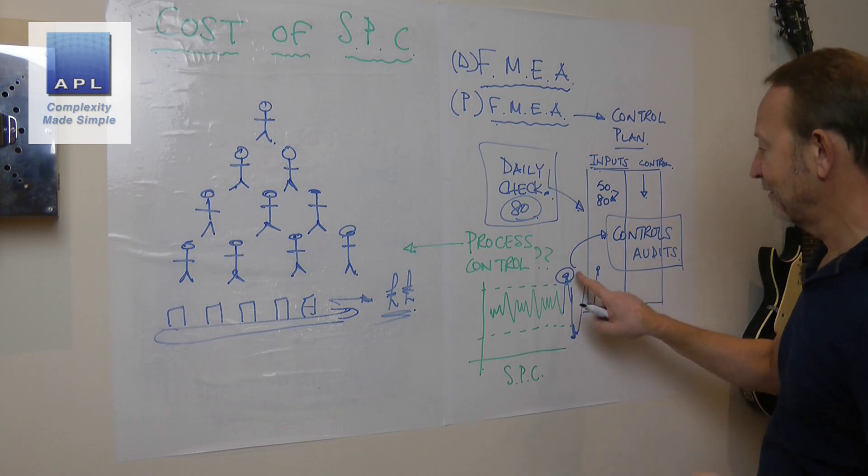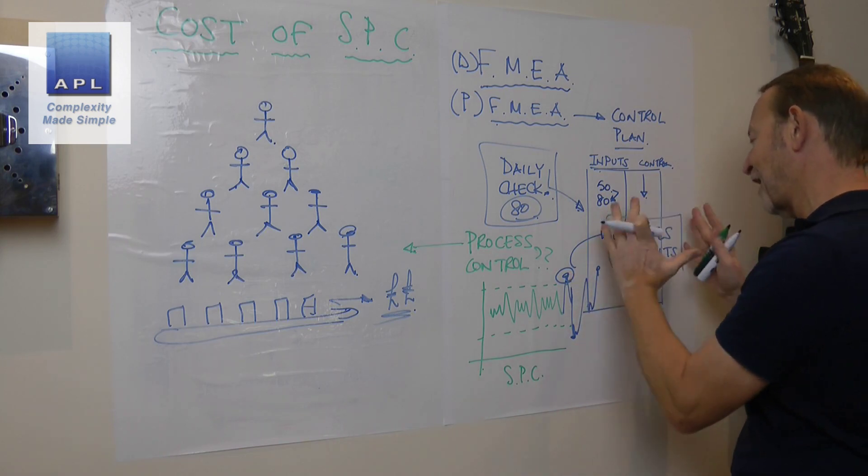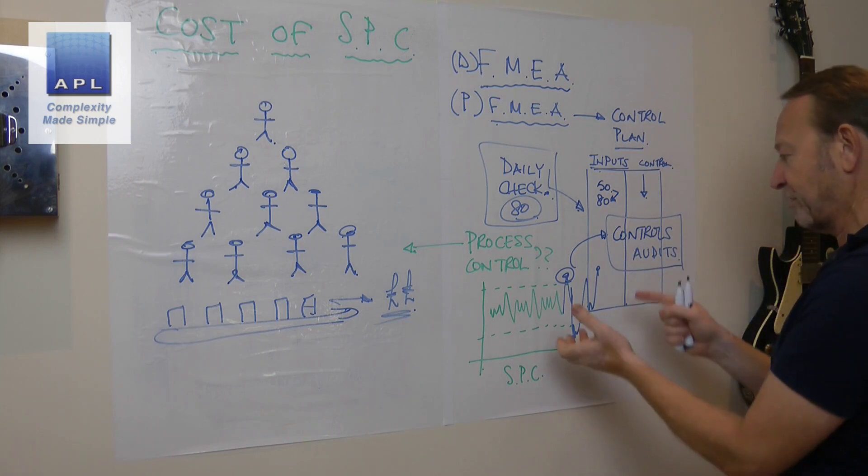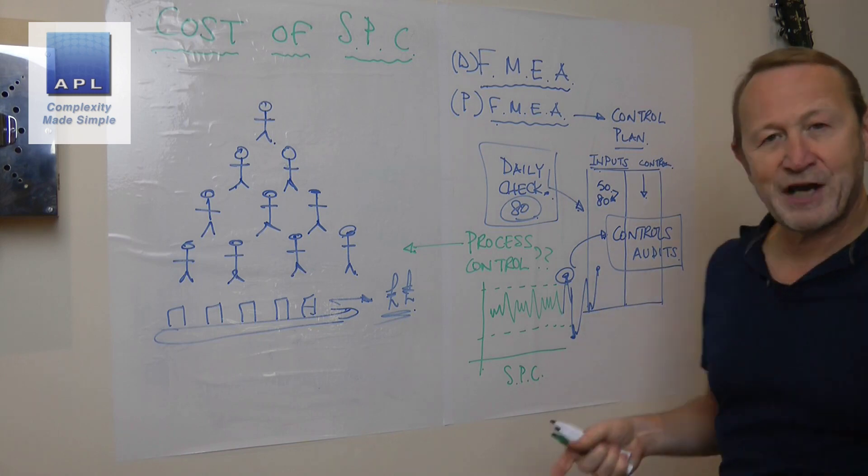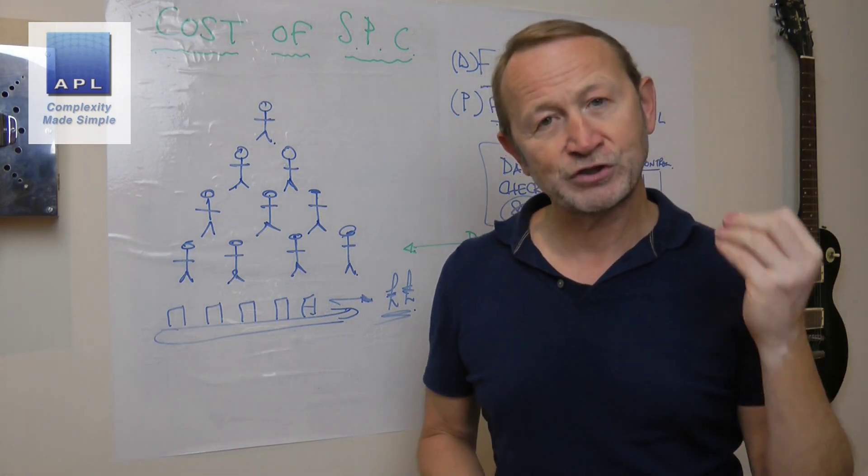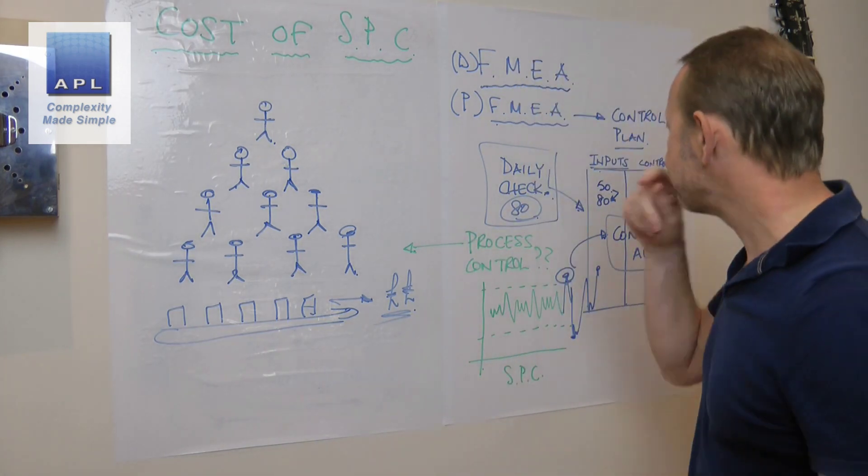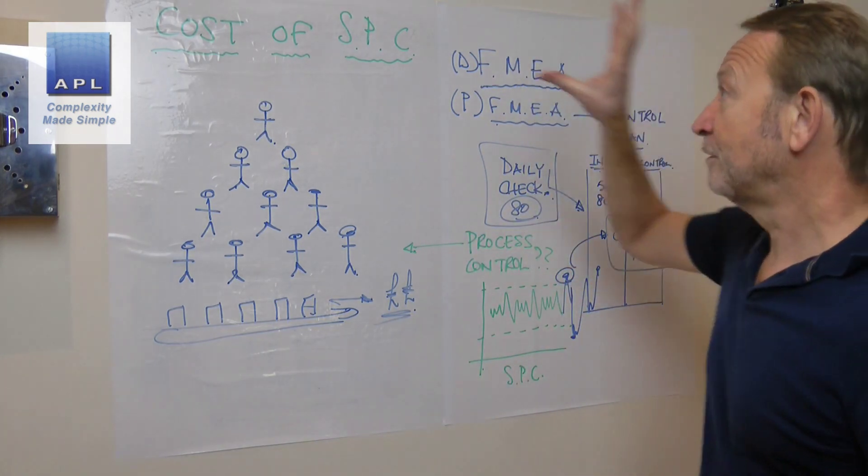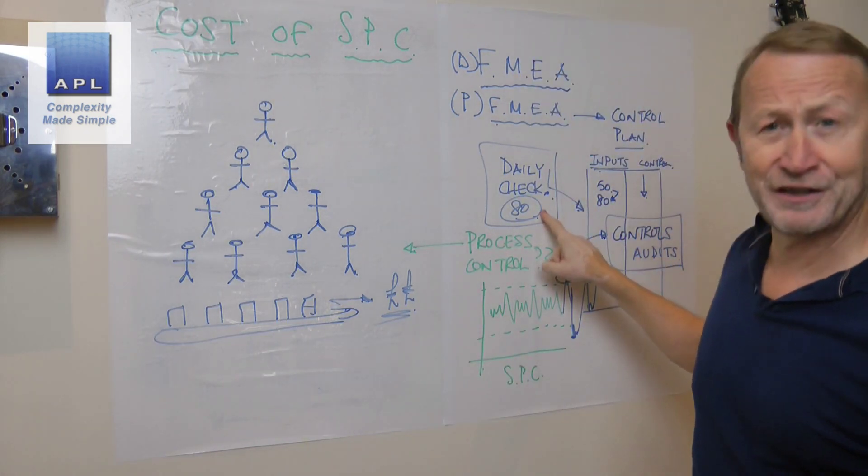Because what do you do when you get this out-of-control symptom—and it might be two months, three months before you get the symptom—what do you do? You do a controls audit. And that's it, that's your problem-solving technique. Because you've got standard work for how you control the process. When something goes wrong, you just audit what the standard work is, and you will find one of those controls are being violated or maybe a couple being violated.